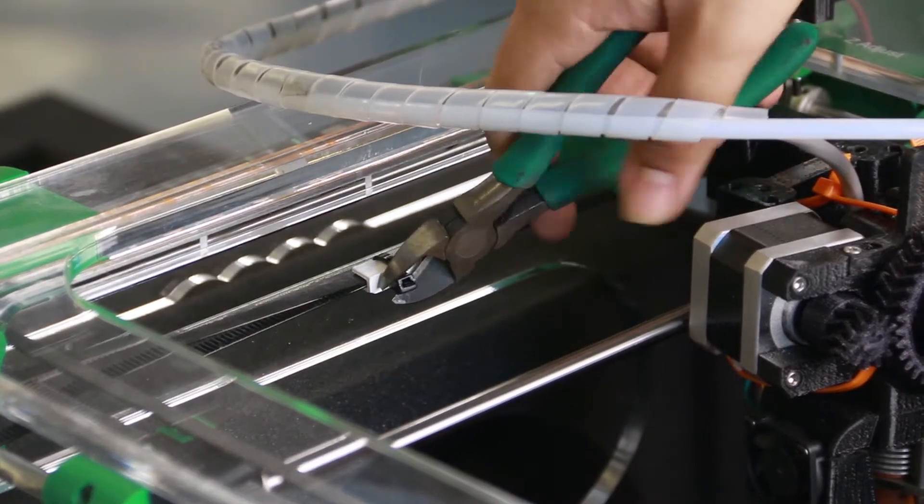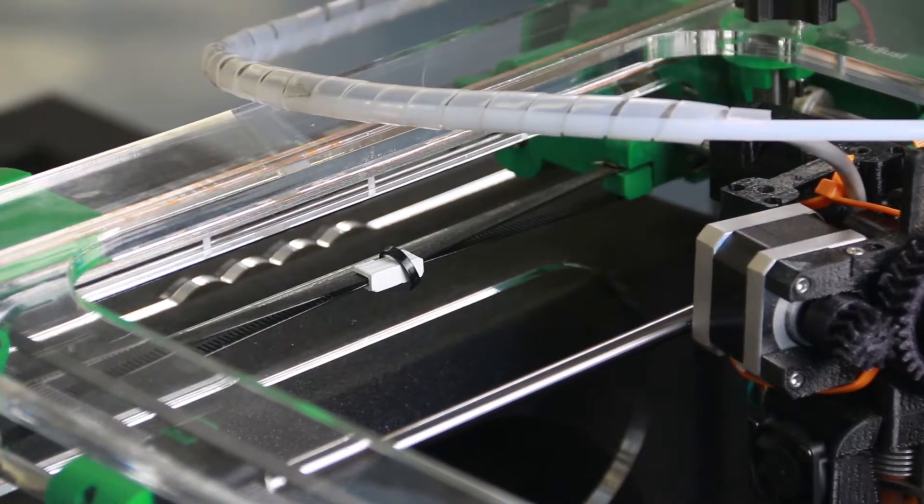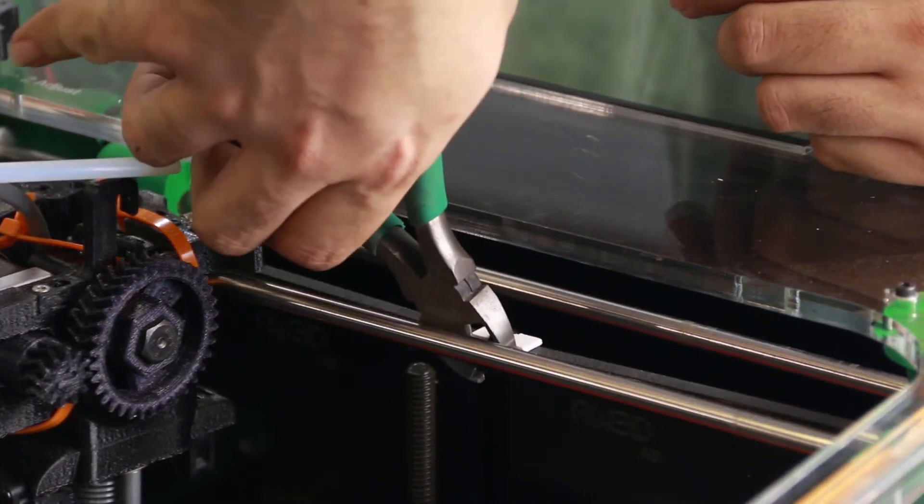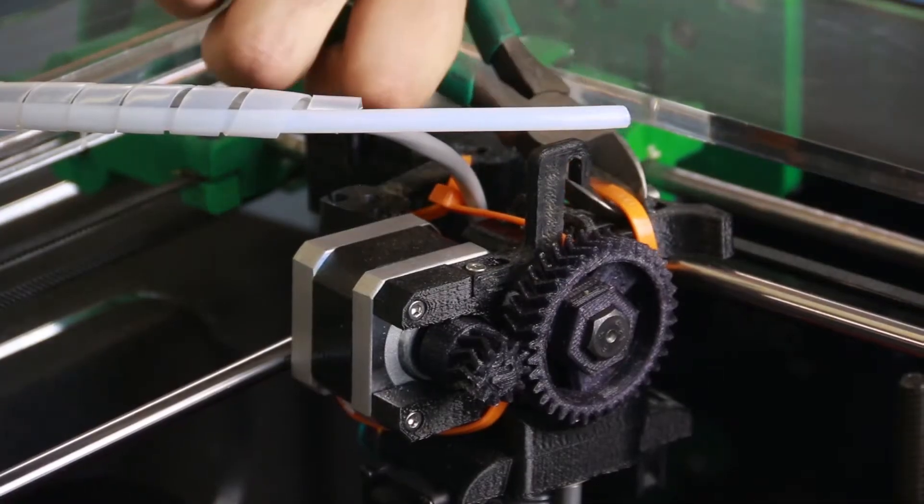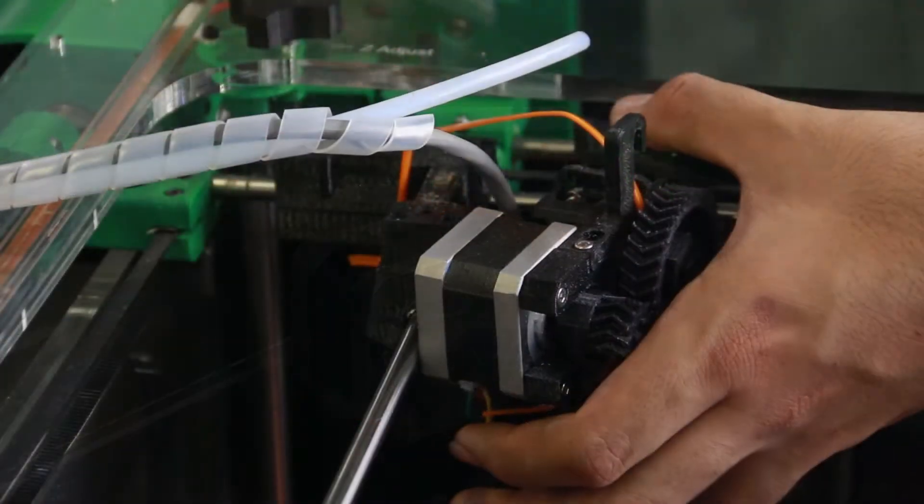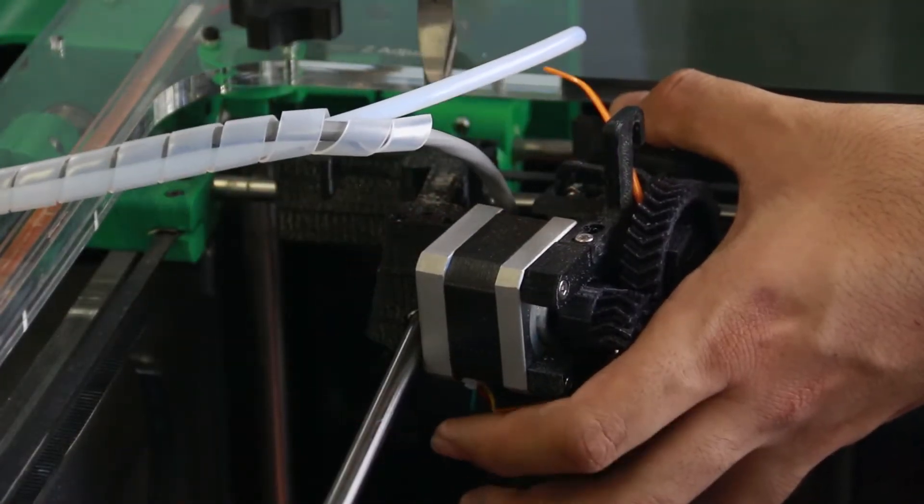Locate the zip ties holding the belts and cut the ties off with your cutters. Remove the belt locks. While holding the extruder assembly, cut the orange zip ties to release the assembly.